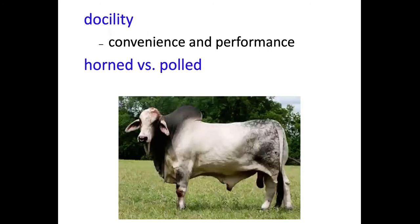Some other criteria when evaluating bulls: docility is huge. If you're buying, most people pay attention to it; if you're a breeder, I would strongly encourage you to as well. We've always known docility was a convenience trait, but over the last 10 to 15 years research has shown there are performance benefits as well. So docility is something we definitely want to pay attention to.